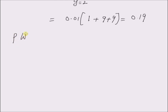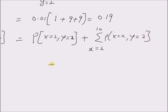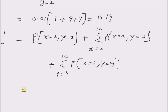Similarly, for P(W=2), we have P(x=2, y=2) plus the summation from x=3 to 10 of P(x, y=2), plus the summation from y=3 to 10 of P(x=2, y). This is clearly equal to 0.01 × (1 + 8 + 8), which is equal to 0.17.